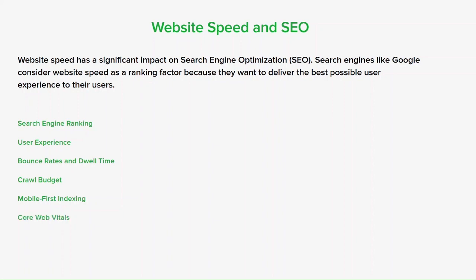Core Web Vitals are a set of user experience metrics Google considers essential for determining page experience. These include Largest Contentful Paint (LCP), First Input Delay (FID) and Cumulative Layout Shift (CLS), which measure loading performance, interactivity and visual stability respectively — particularly important for website speed and SEO. To improve website speed for better SEO, steps include optimizing images by compressing them without sacrificing quality, removing unnecessary code, leveraging browser caching, and optimizing server response time.